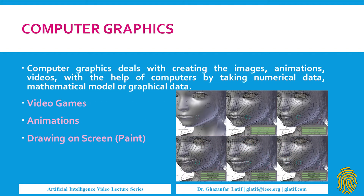Now, what is the difference when we talk about computer graphics? In computer graphics, the output must be visual — either an image, a video, an animated thing, animated graphics, or a video game. But the input does not need to be images. Input can be text information, numerical data, or geometrical data. We give input in the form of numerical, geometric, or textual data, and it generates a graphical image or graphical output.